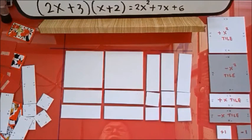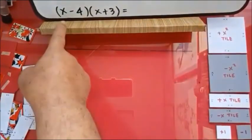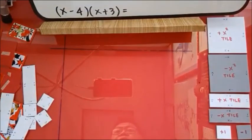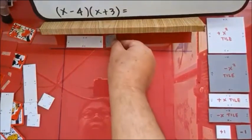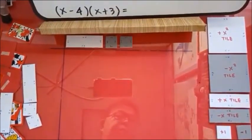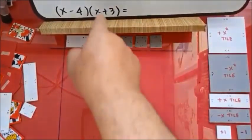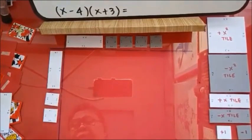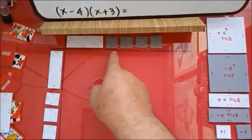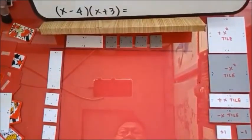Okay, another one. We have (x − 4)(x + 3). So x is positive. Negative 4 — that is four gray tiles. Then x plus 3: one x tile and three positive unit tiles. So for x minus 4: one positive x and four negative unit tiles. For x plus 3: one x and three positive unit tiles.